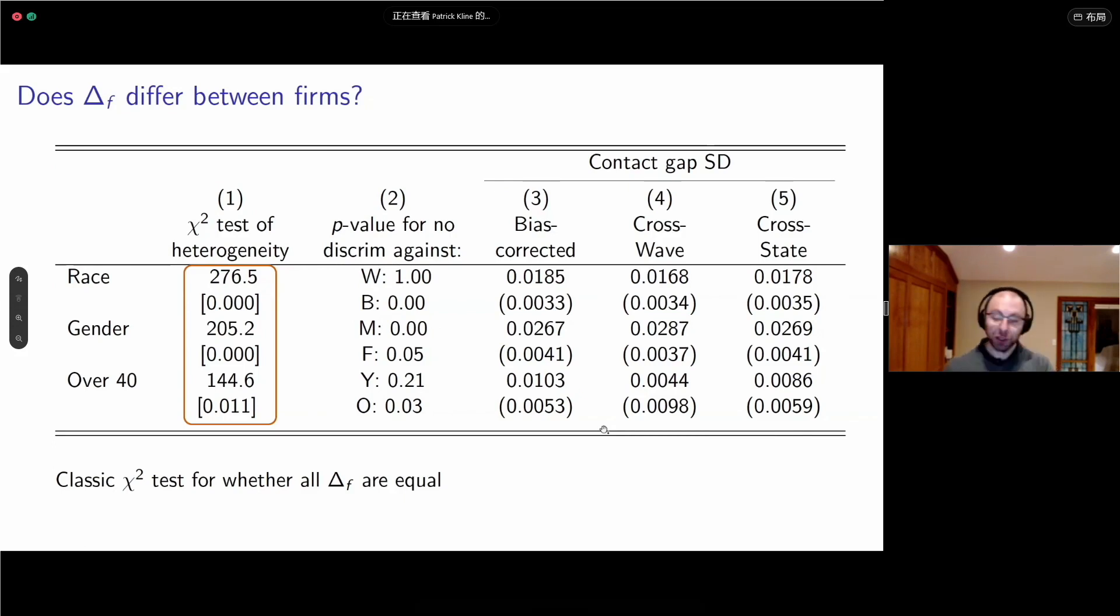The first question is, do those delta_F's, the firm-wide average contact gaps, differ across firms or are they all the same level of average bias? For that, we can start with a simple chi-square test of heterogeneity. Here are the p-values. We easily reject the null that all firms discriminated on the basis of race equally. We easily rejected they all discriminated on the basis of gender equally, which is interesting because the mean callback rate for men and women was the same. So the average treatment effect is zero, but the variance of the treatment effects must not be zero. For age, we can also reject that they're all the same.